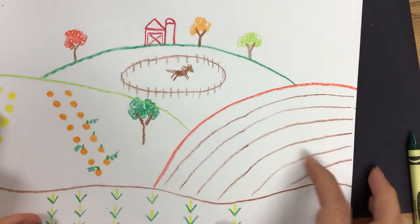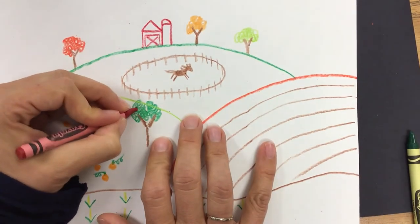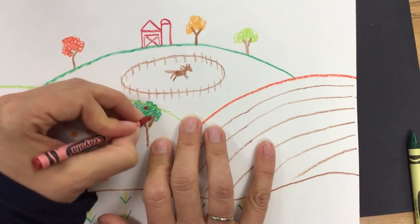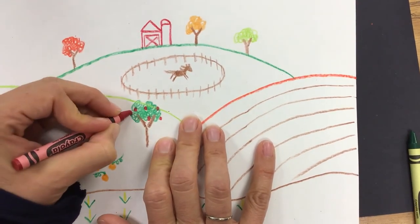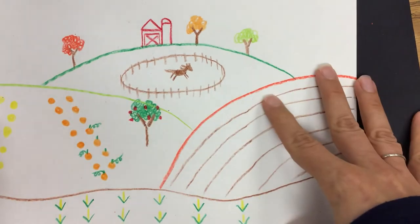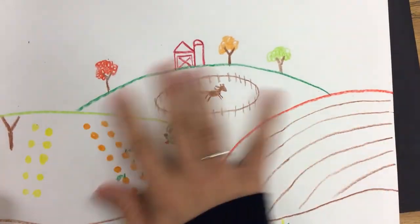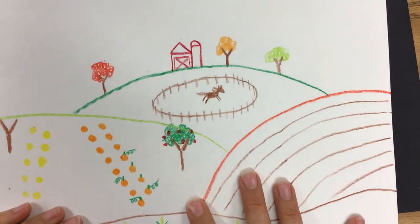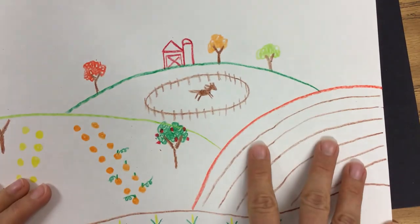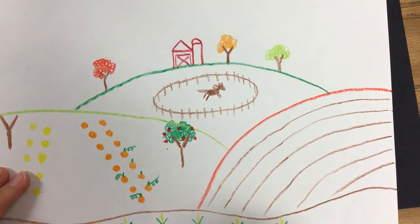And another fun thing you can add that's ready to be picked in the fall are apples. You can make these apple trees. Once you feel like you have enough details on your farm you're all set for this week. Like I said next time we're going to talk about adding more color in the background spaces and we're going to add another fun thing too at the very end. Okay thanks for watching.